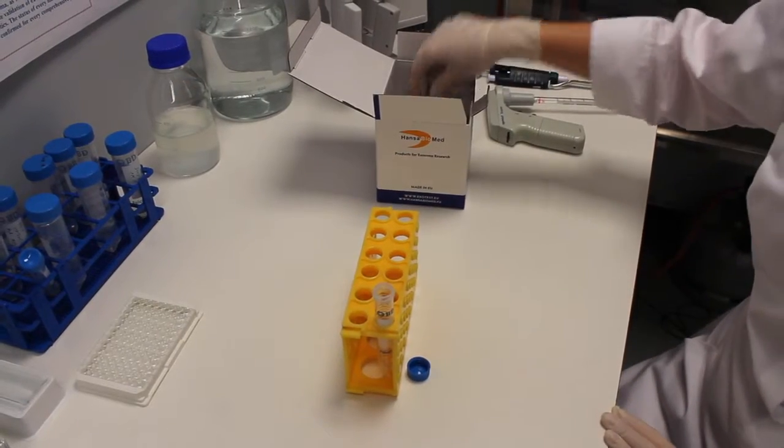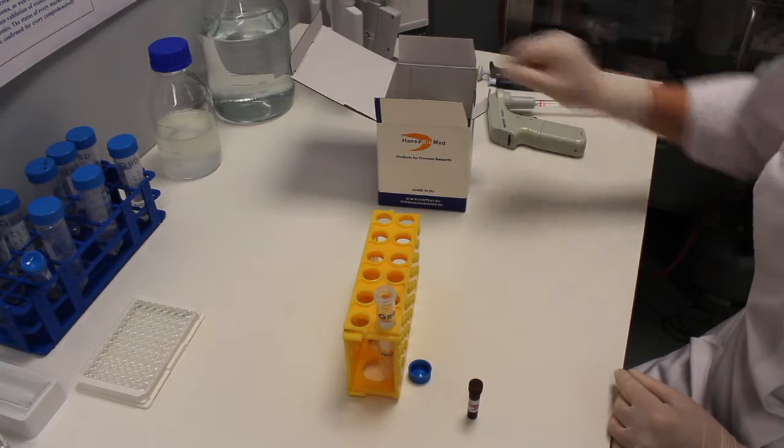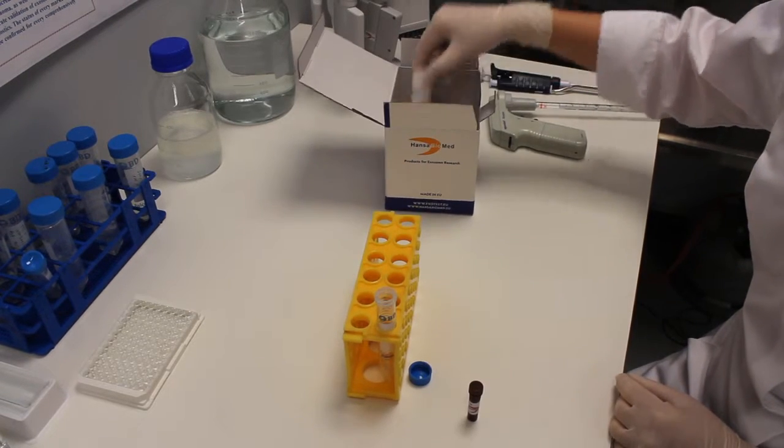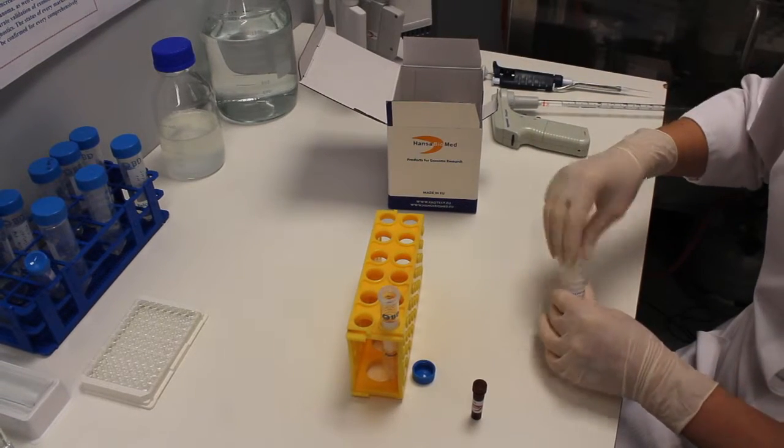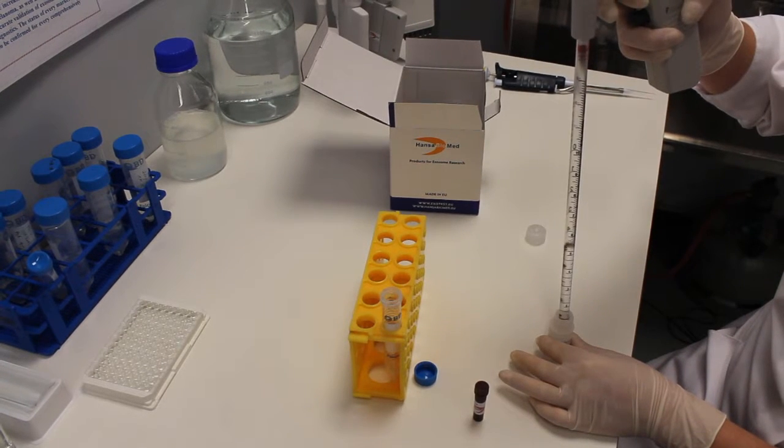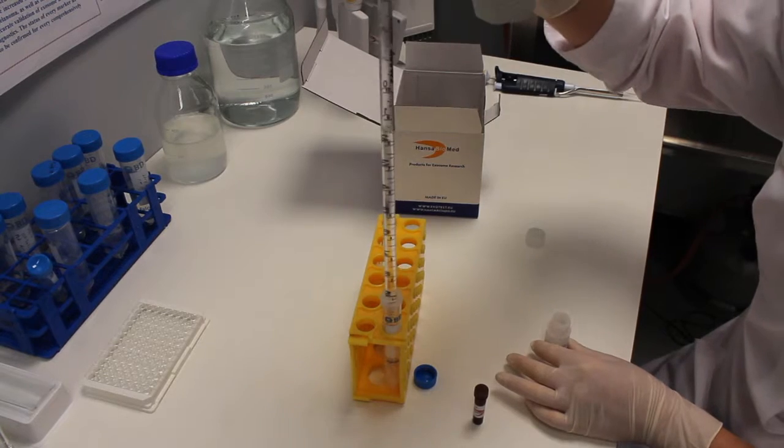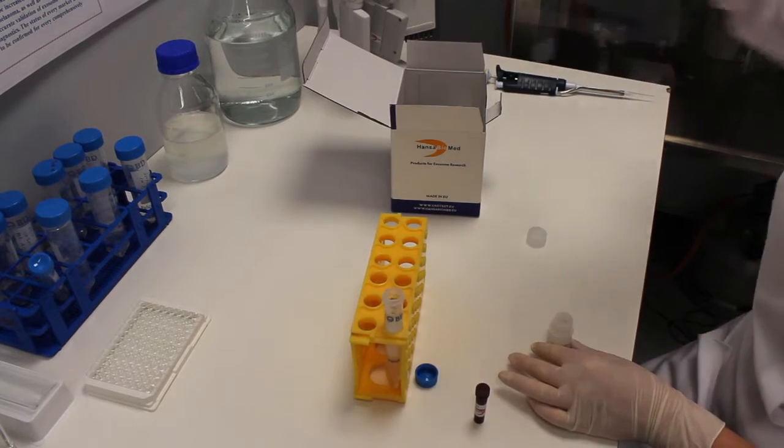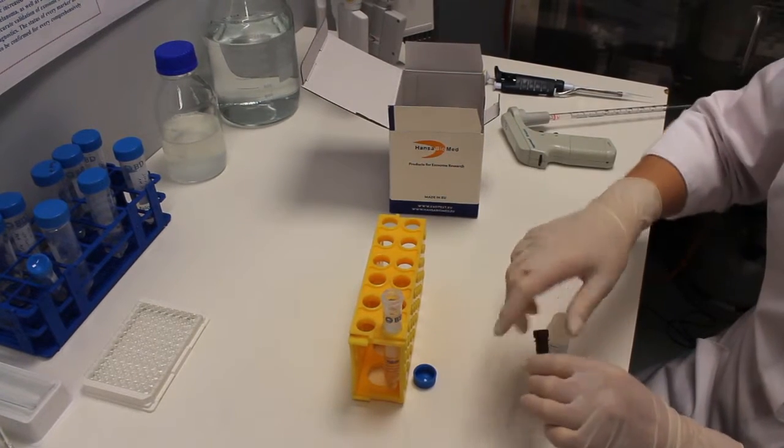Dilute secondary antibodies 2,000 times. To do this, we take 10 ml sample buffer and add 5 microliters of secondary antibodies.